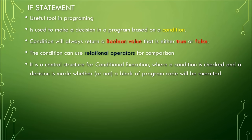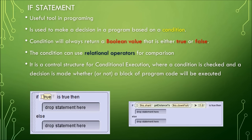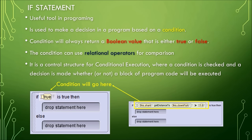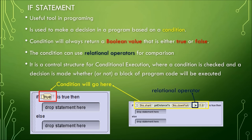The if statement is a very powerful and useful tool in programming. It is used to make a decision in a program based on a condition. A condition will always return a boolean value — either true or false. The condition can use relational operators for comparison. The if statement is also known as a control structure for conditional execution, where a condition is checked and a decision is made whether or not a block of code will be executed.